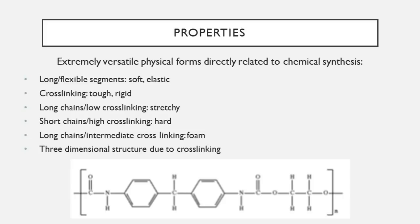Much of polyurethane's versatility comes from how different chains are combined — most modern polyurethanes are block copolymers or polymer networks combining different polyurethane chains, giving them varying macro-scale properties from different nano-scale structures. Long flexible segments create soft and elastic behavior. Cross-linking gives toughness and rigidity. Long chains with low cross-linking are stretchy; short chains with high cross-linking are hard and even brittle. Long chains with intermediate cross-linking are used in foaming applications.